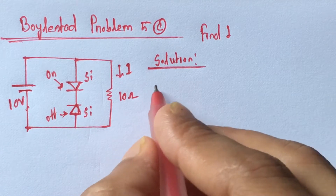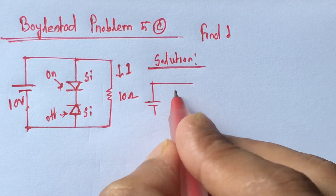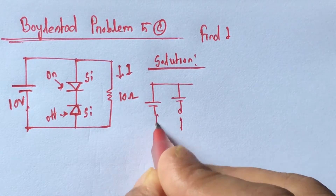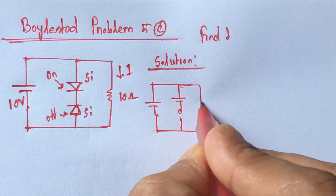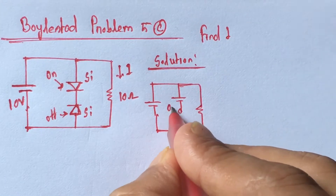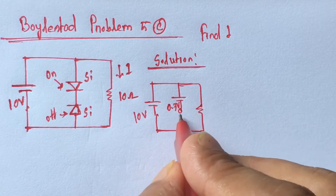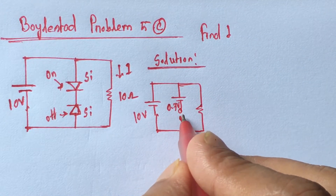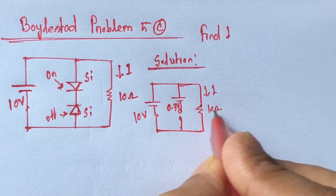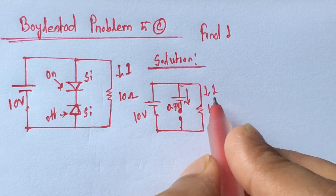we will get 0.7 volt, 10 volt, and an open circuit for the second diode, with the 10 ohm resistor carrying current I. Since this is an open circuit, no current will flow through this path.